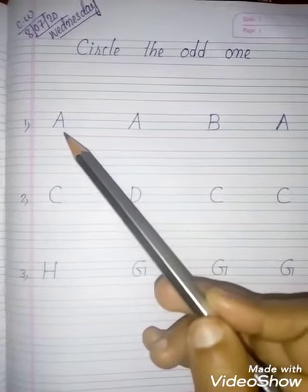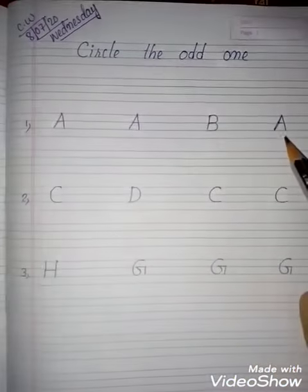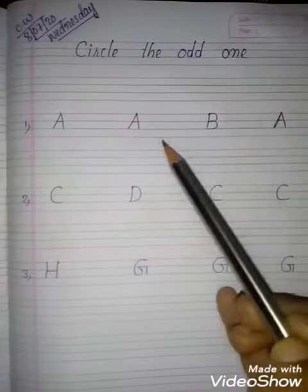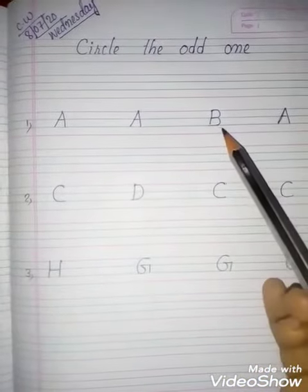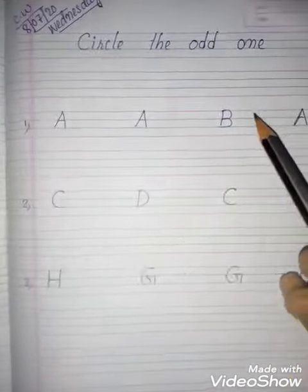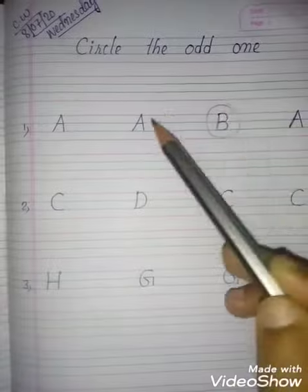This is the alphabet: A for apple, A for apple, B for ball, A for apple. Now say which one is different? Yes, B for ball is different. Then what you will do? You will circle it like this.